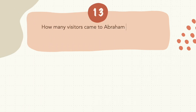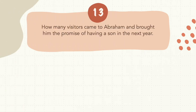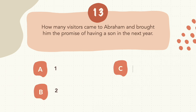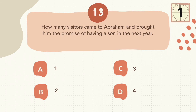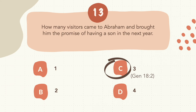Question 13: How many visitors came to Abraham and brought him the promise of having a son in the next year? The correct answer is C, 3.